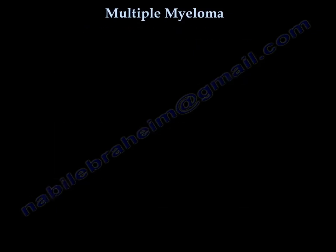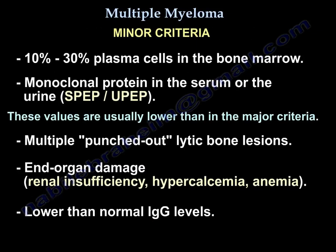Minor criteria include: 10–30% plasma cells in the bone marrow; monoclonal protein in the serum or urine (SPEP or UPEP), at values lower than in the major criteria; lytic bone lesion; and end organ damage such as renal insufficiency, hypercalcemia, anemia, or lower than normal IgG levels.